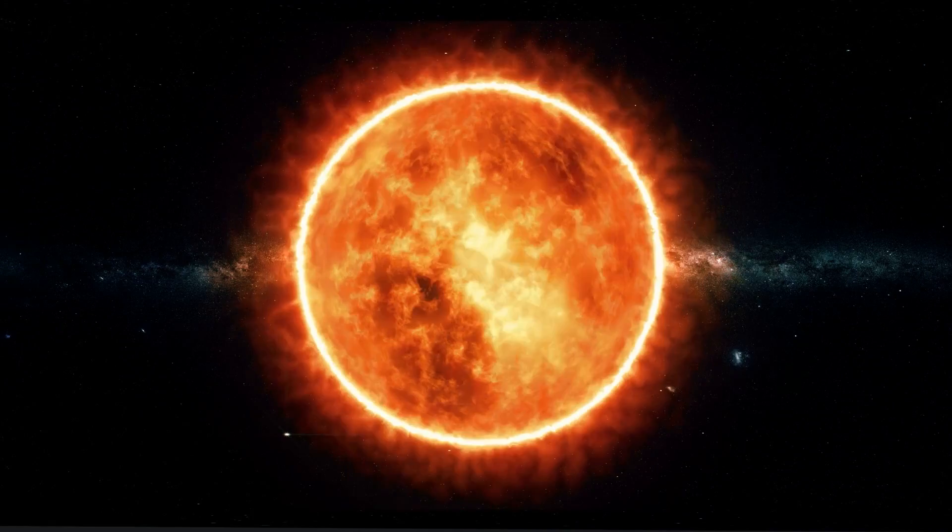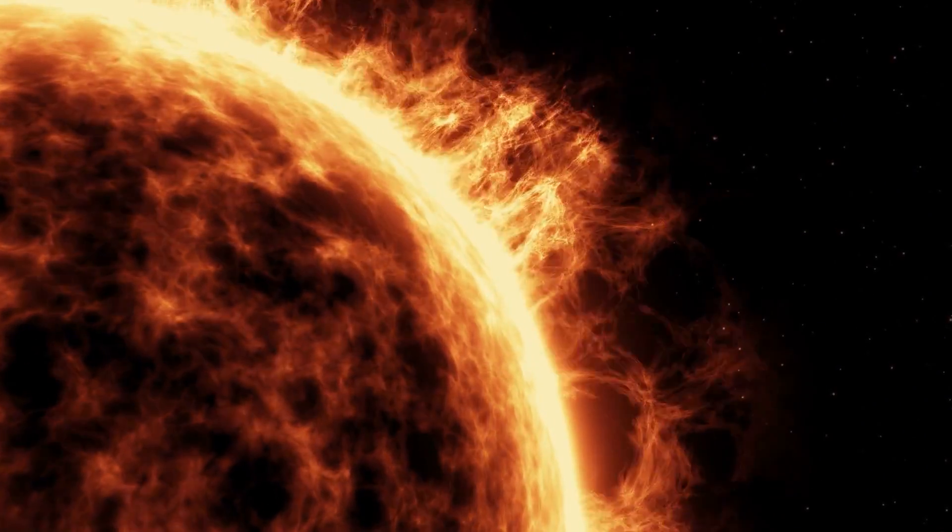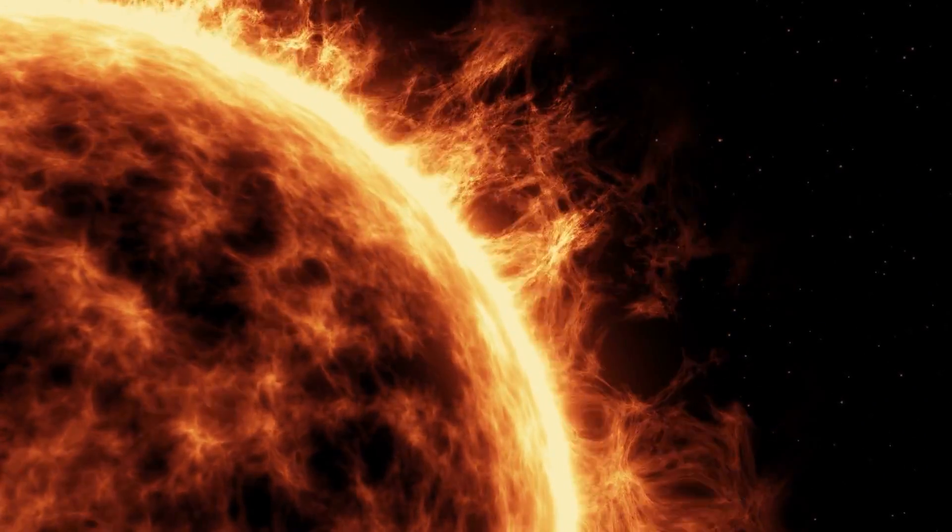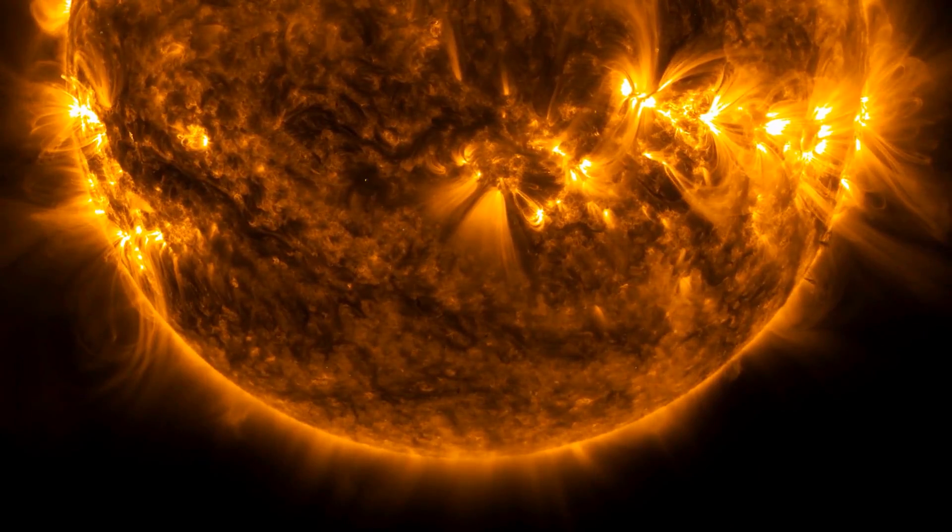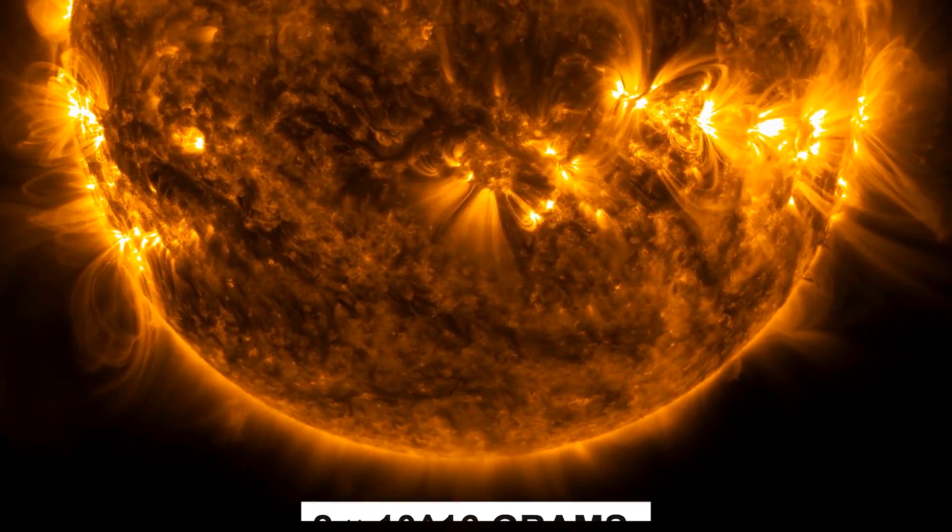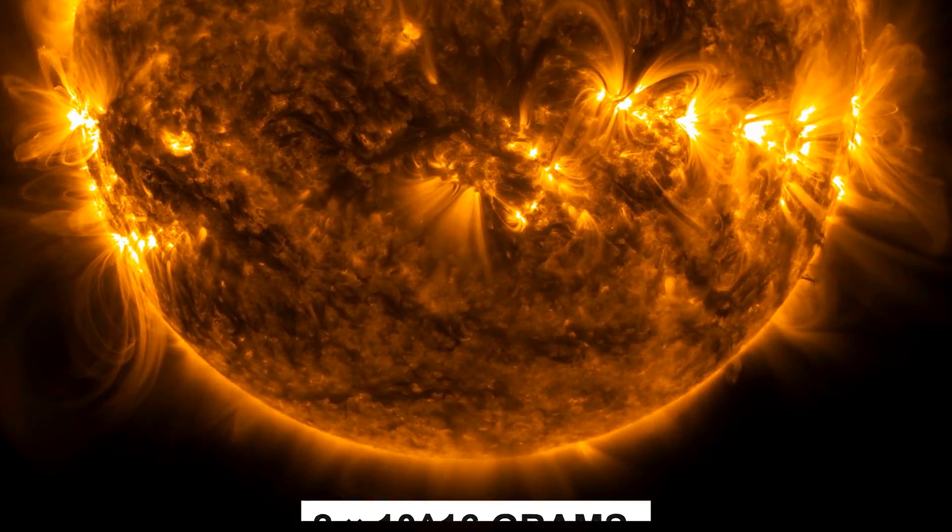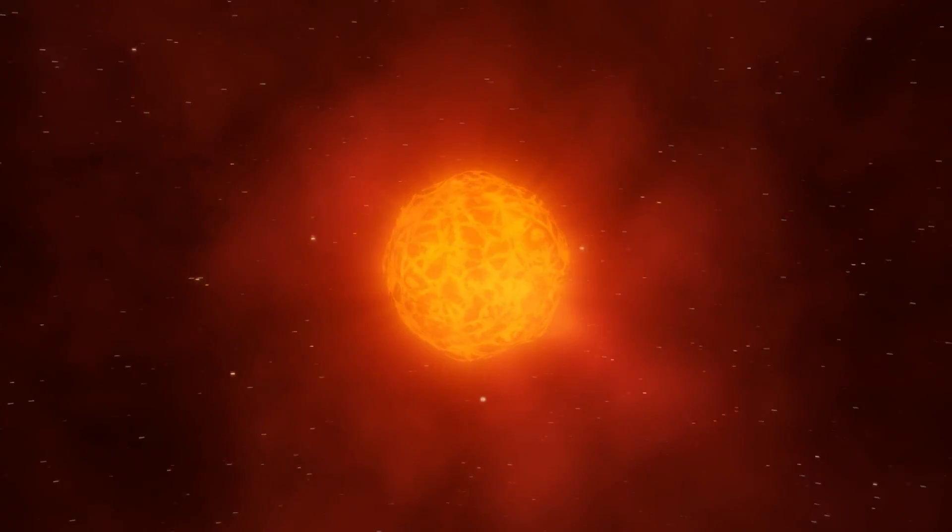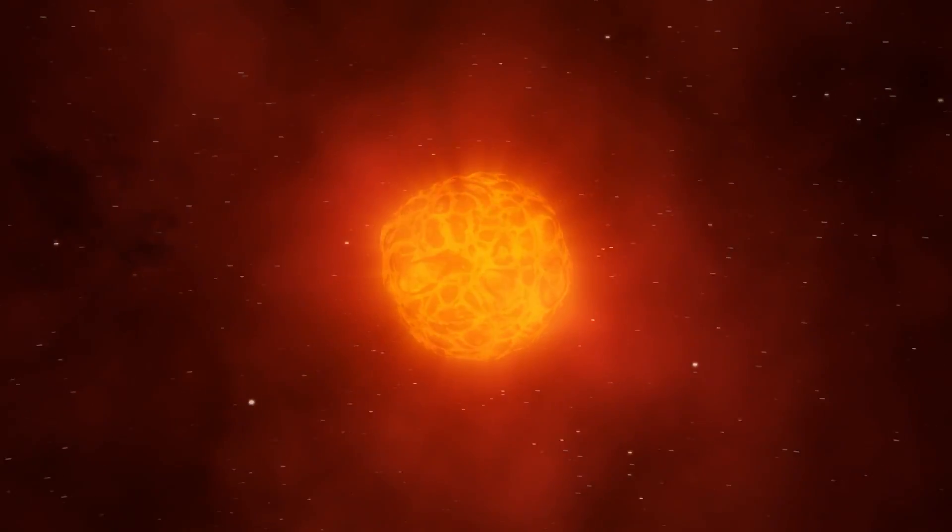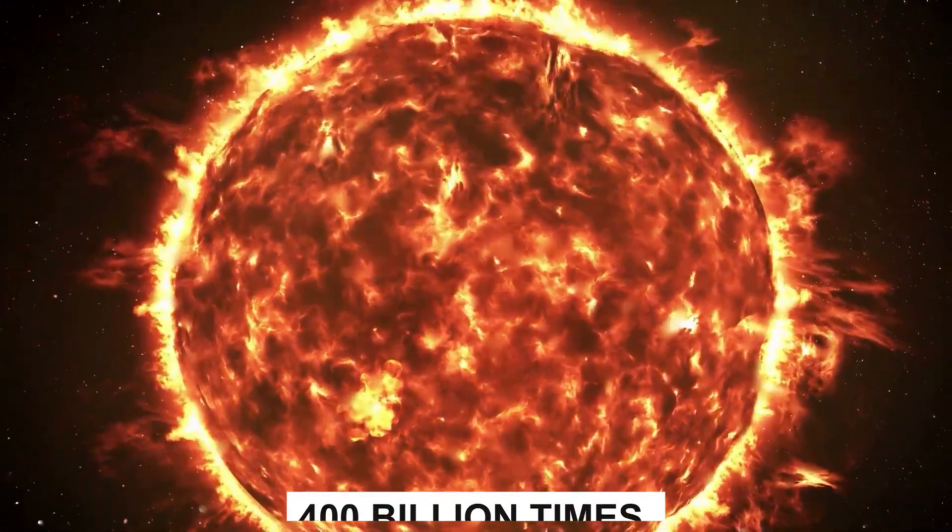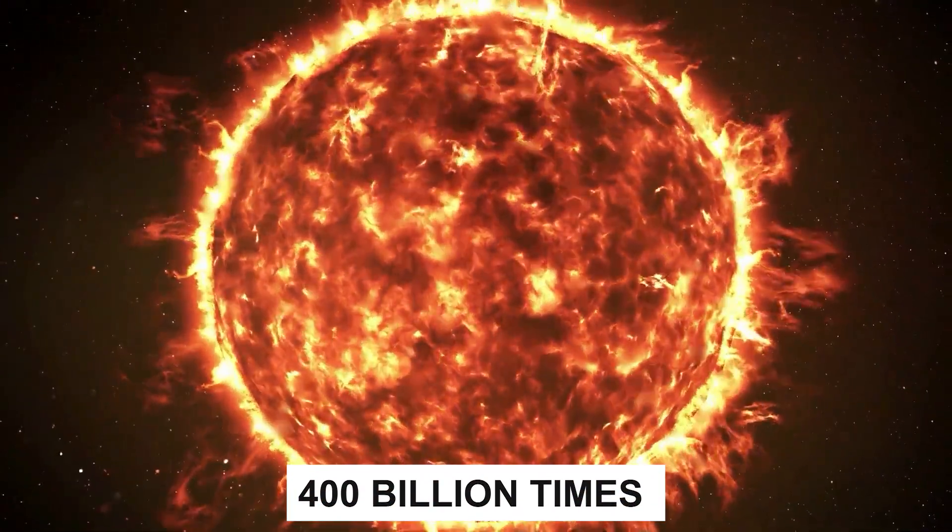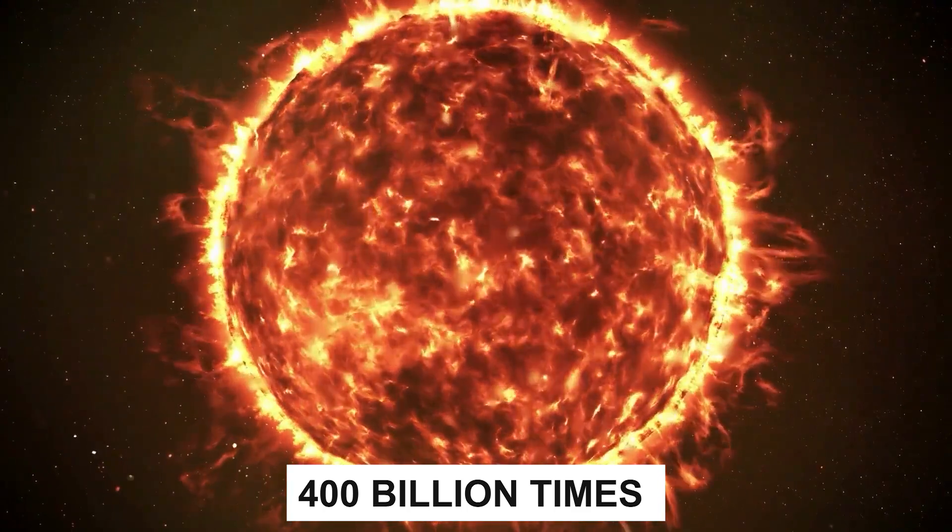Now, if our sun, which is also a star, routinely ejects parts of its tenuous outer atmosphere, the corona, it will eject 2 times 10 to the 16th power grams of plasma waves. So when a star as big as Betelgeuse's CME happens, it can eject 400 billion times more mass than a typical ejection from the sun.